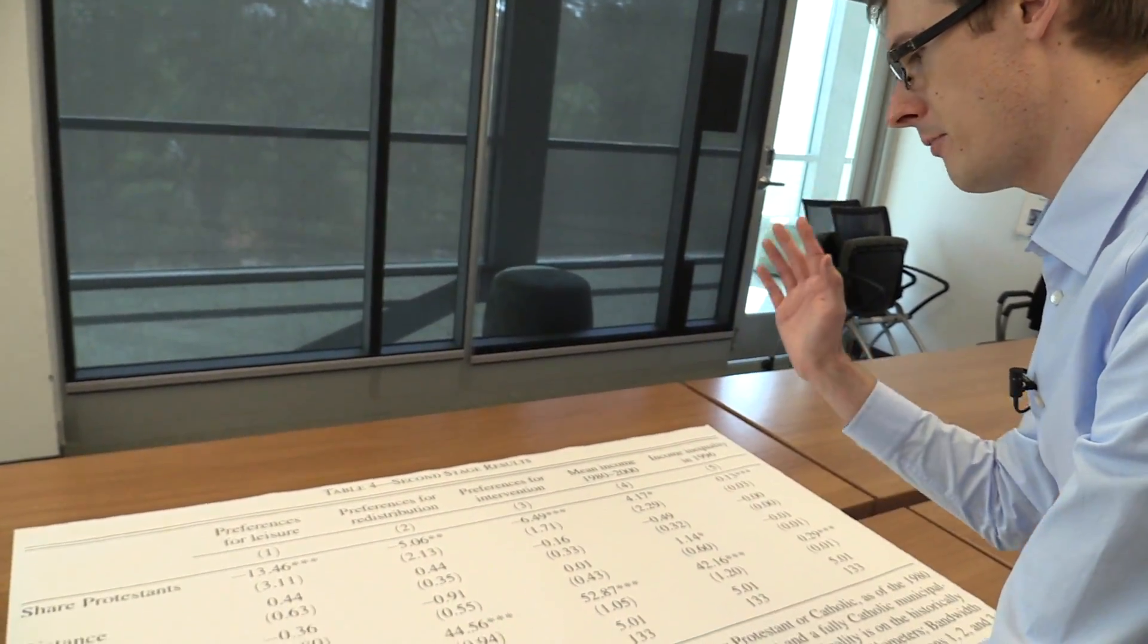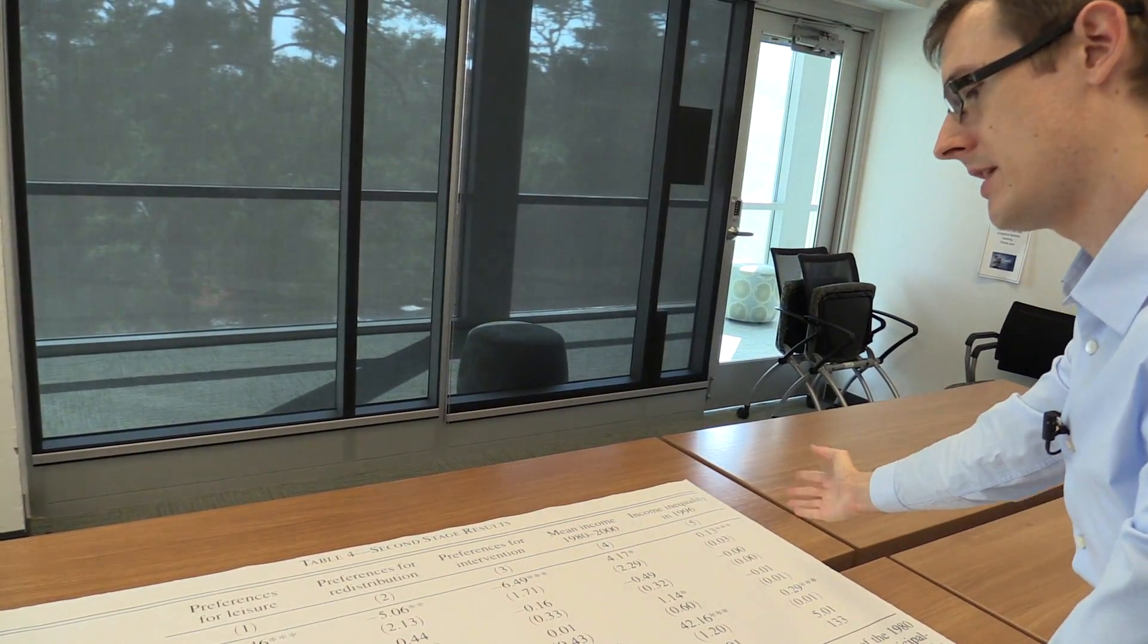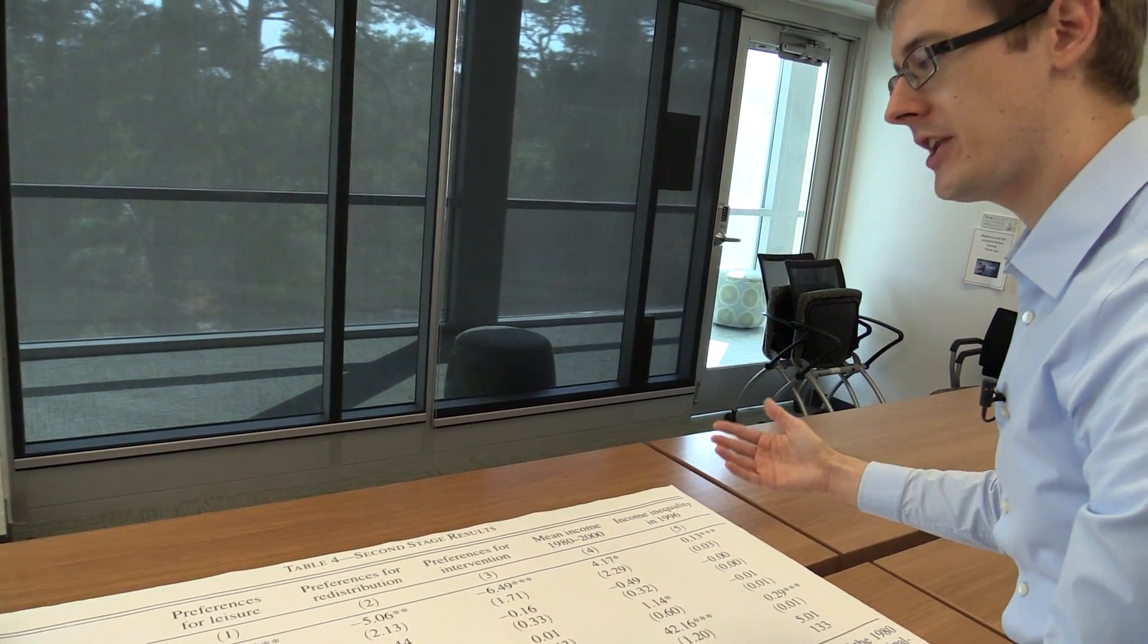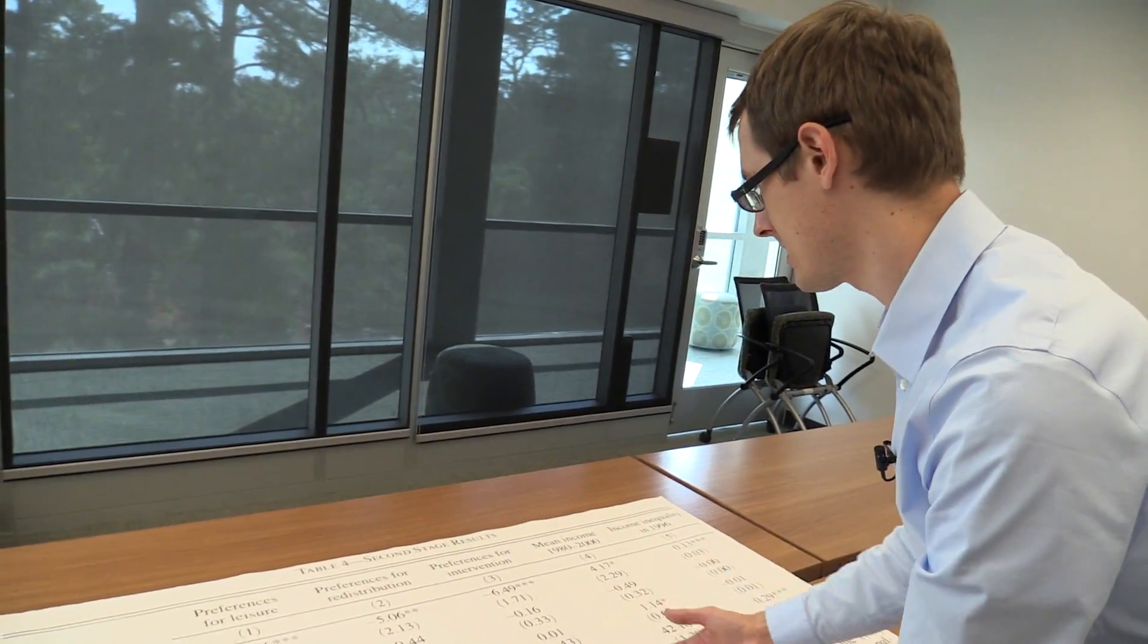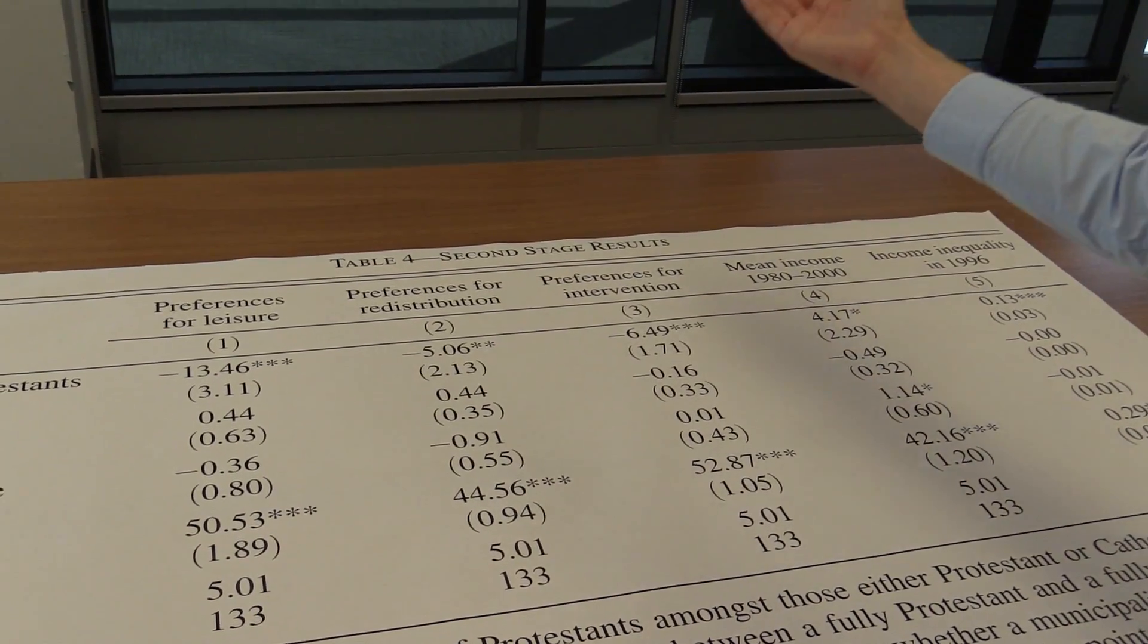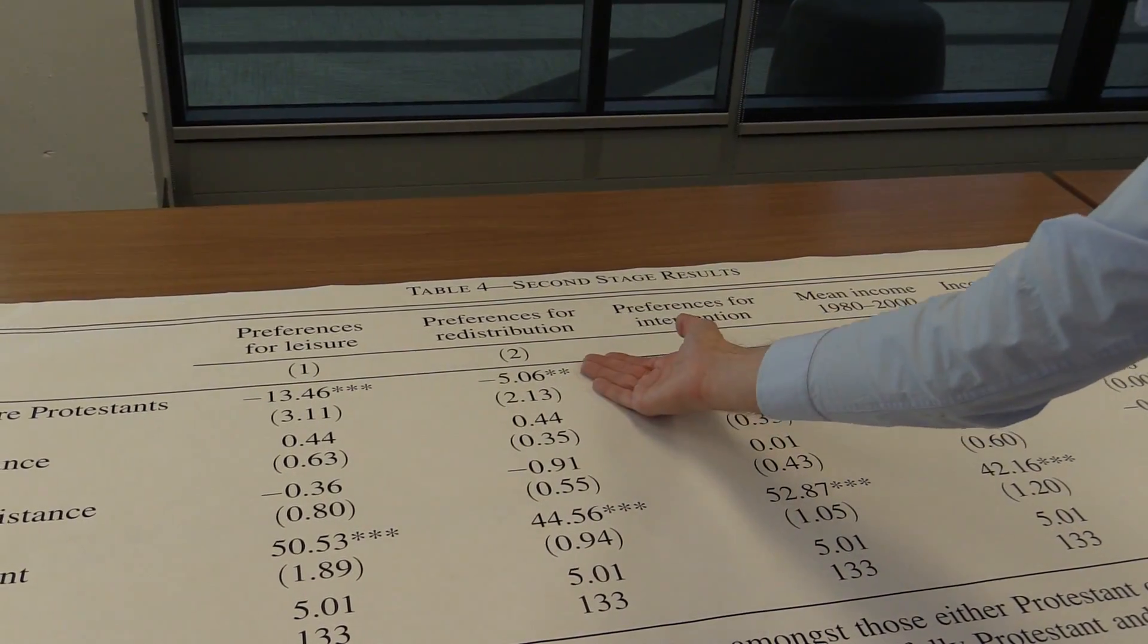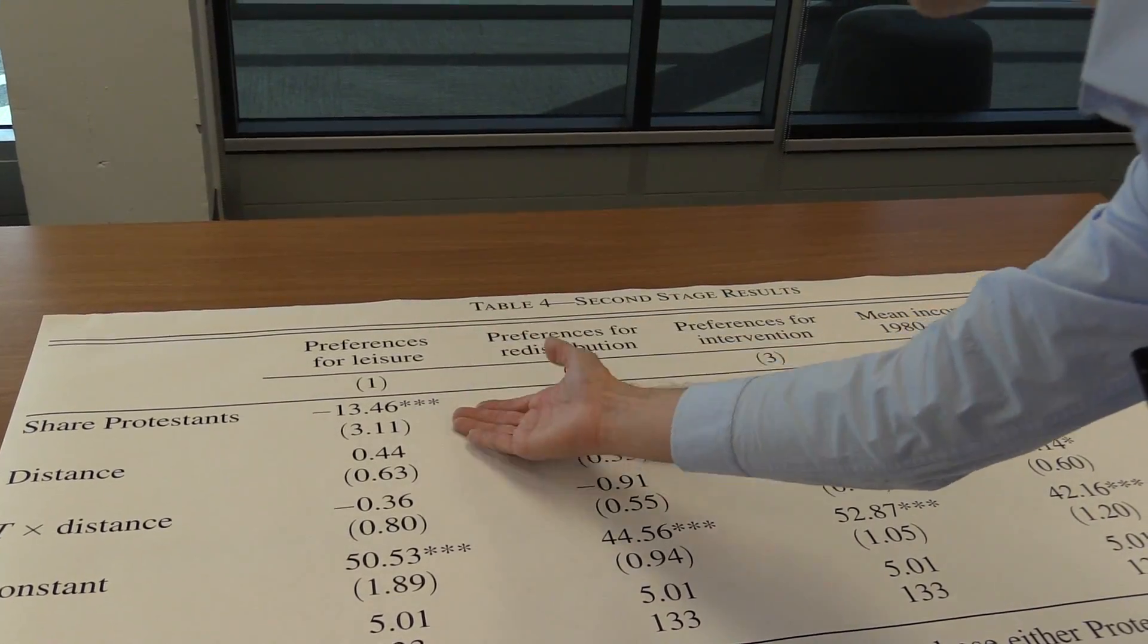They're going to say, look, because we have an RDD, we have a good idea that we're getting a real causal effect of being Protestant on these different outcomes. And they're going to claim, look, this actually is quantitative evidence for Max Weber's famous thesis that there is a Protestant work ethic. Protestants actually cause you to have higher income inequality, higher mean income, less preference for the government to intervene, less preferences for redistribution, and less preferences for leisure or more preference for work. That's the main finding of this paper. We think we believe it because it's an RDD analysis, and that's what they find.